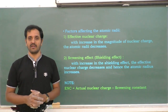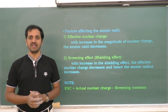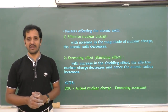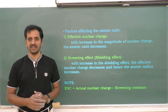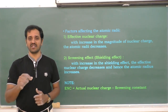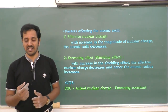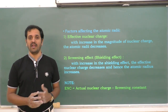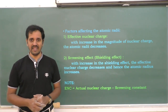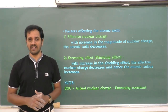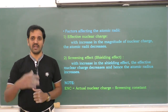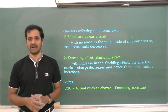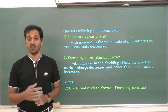Now we shall look into the factors affecting the atomic radii or ionic radii. The first one is effective nuclear charge (ENC), also referred to as Z-effective. The second one is shielding effect or screening effect. The third factor is inter-electronic repulsions. These three factors influence the atomic or ionic size.